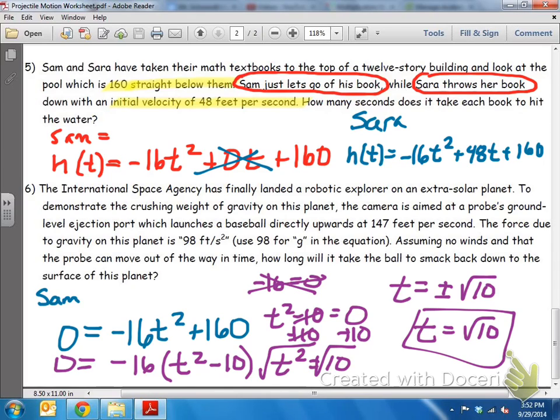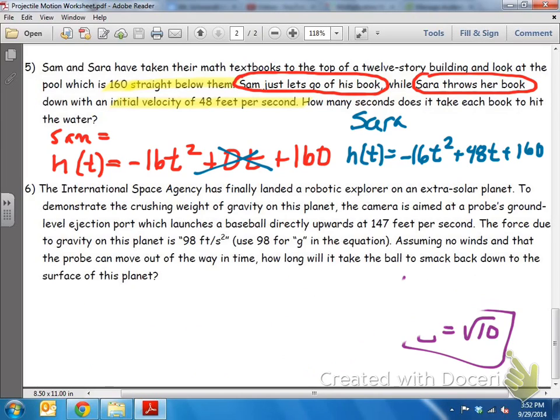All right, so that's how long it takes for Sam's book to hit the water, or when the height is zero. T equals square root of 10, which square root of 9 would be 3, so the square root of 10 would be about 3.1 or 3.2, something like that. So we'll keep that in mind. All right, now let's deal with Sarah.